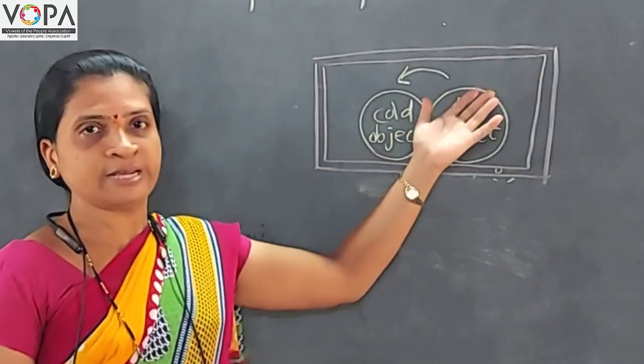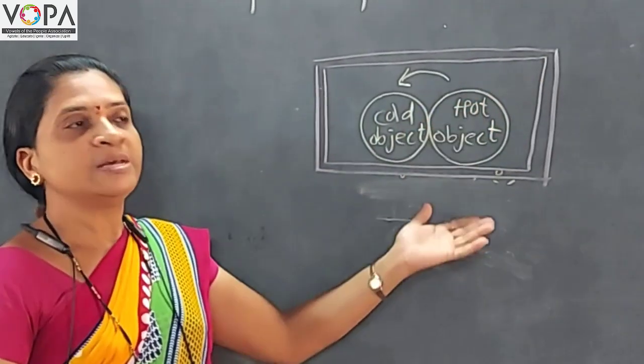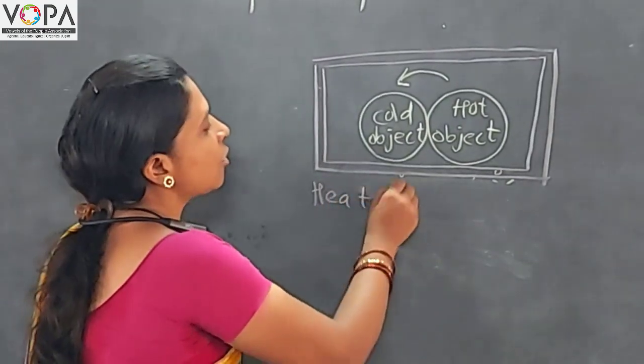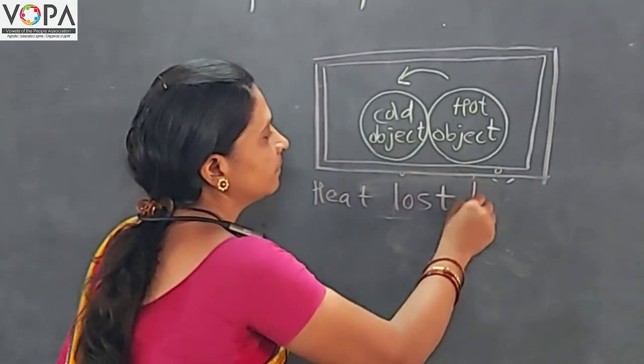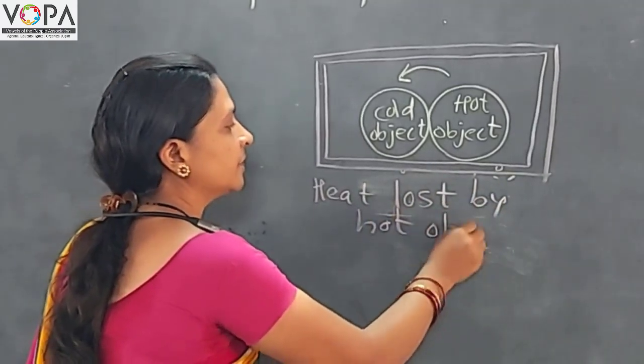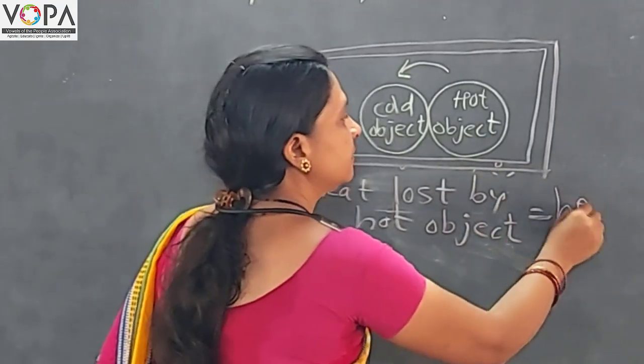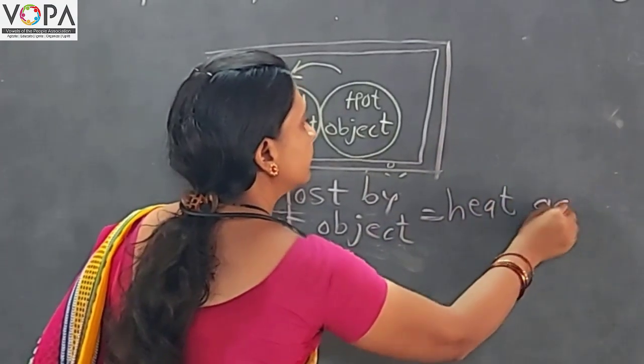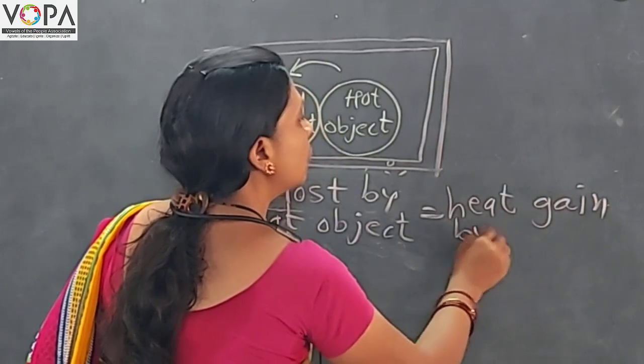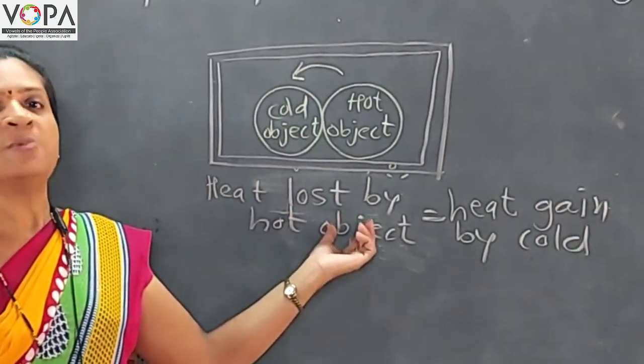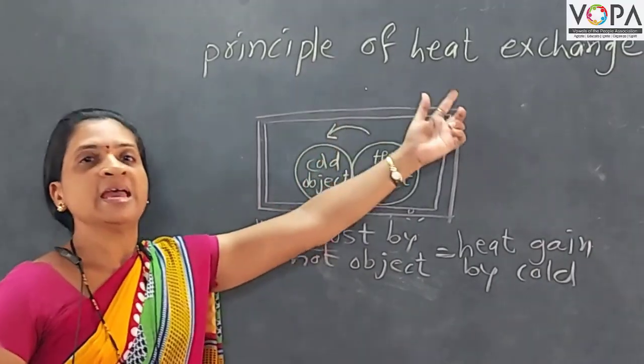The heat takes place. Means here we get the equation the heat lost by hot object is exactly equal to heat gained by cold object and this is nothing but the principle of heat exchange.